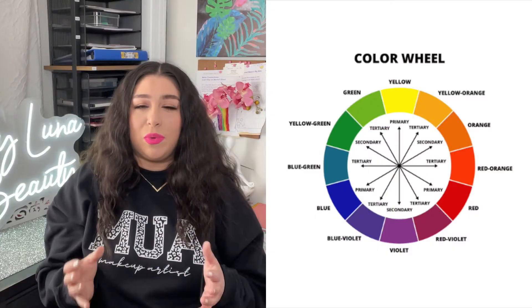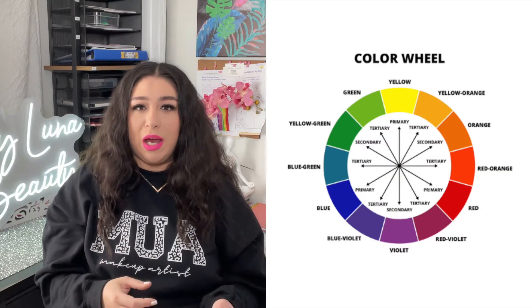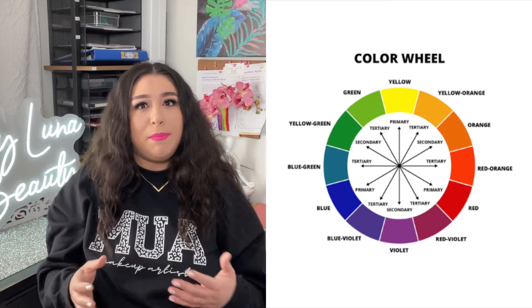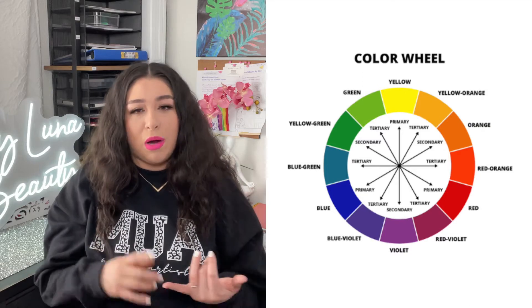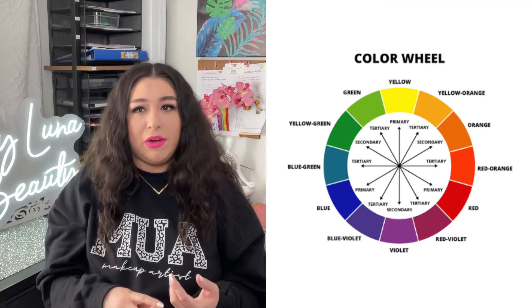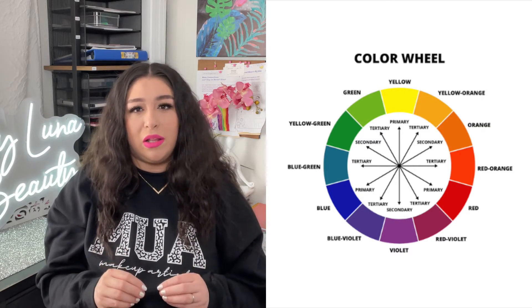A color wheel shows the relationship between colors. It typically includes primary, secondary, and tertiary colors, as well as complementary and analogous color schemes.